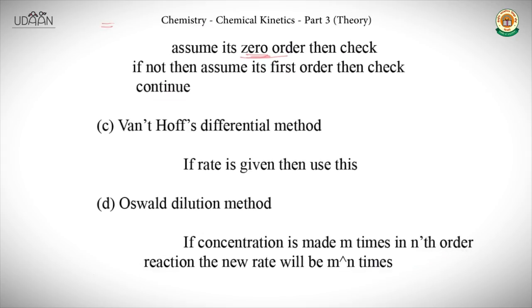The third method is Van't Hoff's differential method. When we have the rate given and we observe how the rate has changed, we can determine the order of the reaction.